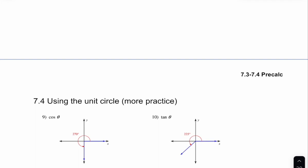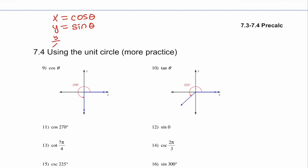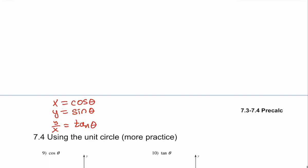On our unit circle, remember that x is your cosine, y is your sine, and y over x is your tangent. The reason we memorize the unit circle is so that we don't need a calculator to tell us the value of a trig function for anything that lands on one of our standard angles — multiples of 60, 45, 30, 90, 180, or 360, or anything coterminal with those spots.